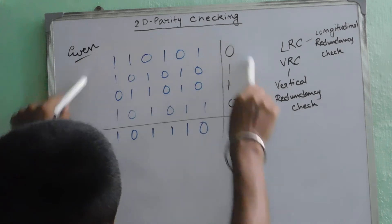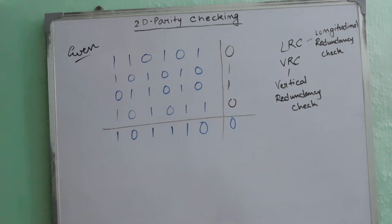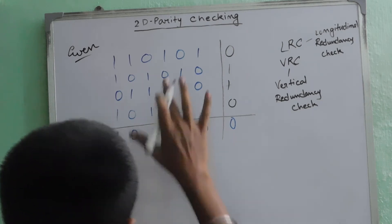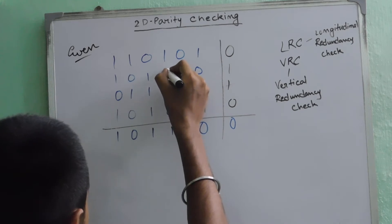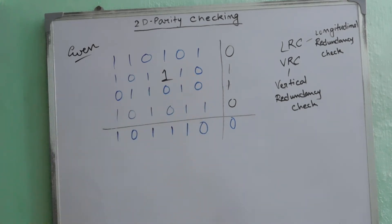This whole data set is transmitted. Now, if this exact data set is received by the receiver, then there is no error. But let's assume that there is an error in one bit — this was 0 and we have changed it to 1. At the receiver's end, the receiver will again calculate the LRC and the VRC.